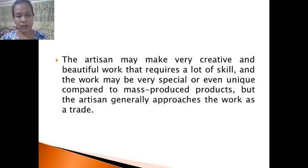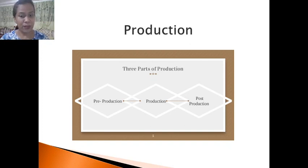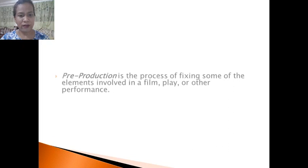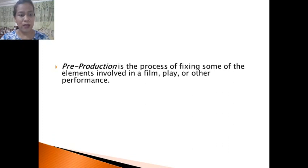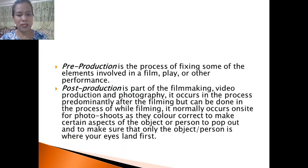Artisans generally approach their work as a trade. Now let's go on to production. There are three parts as shown in the illustration. Pre-production is the process of fixing some of the elements involved in a film, a play, or other performance — it also means preparation.